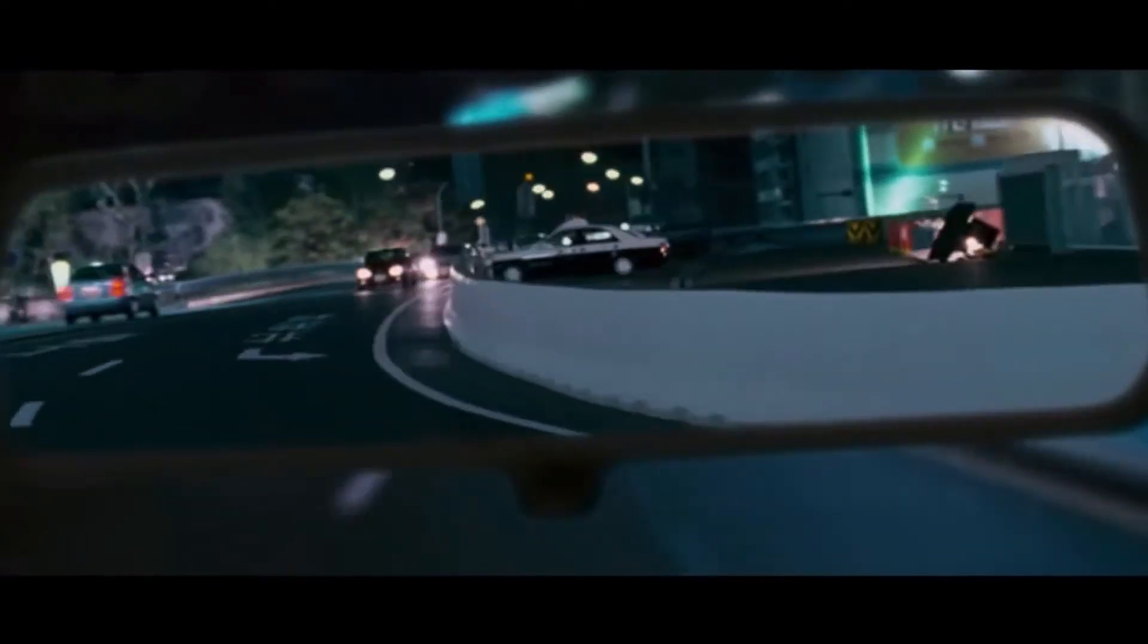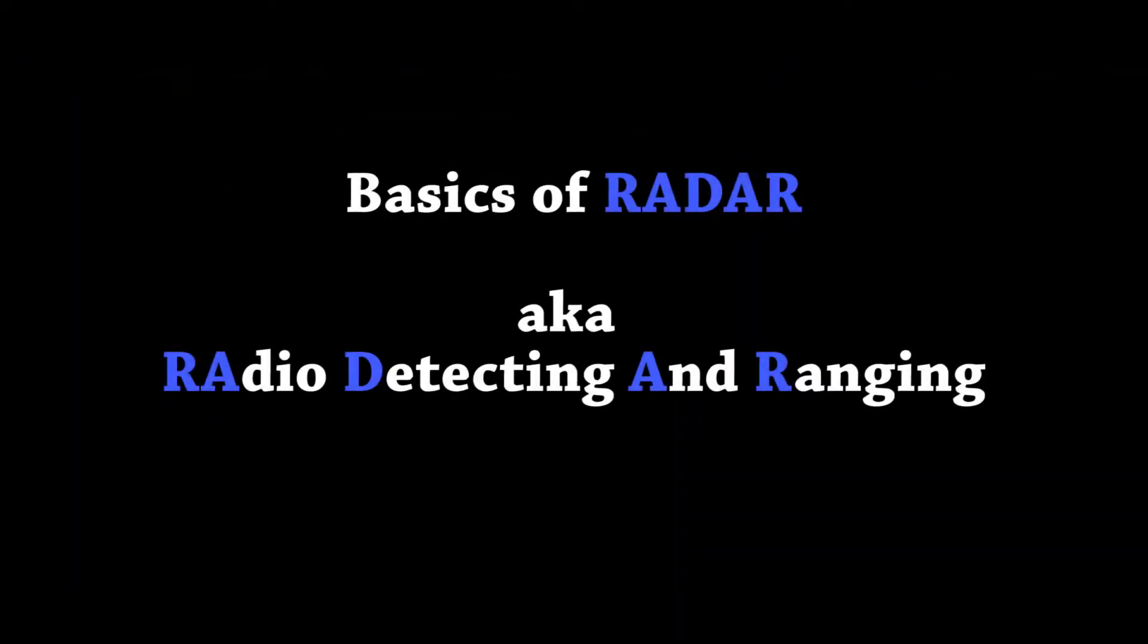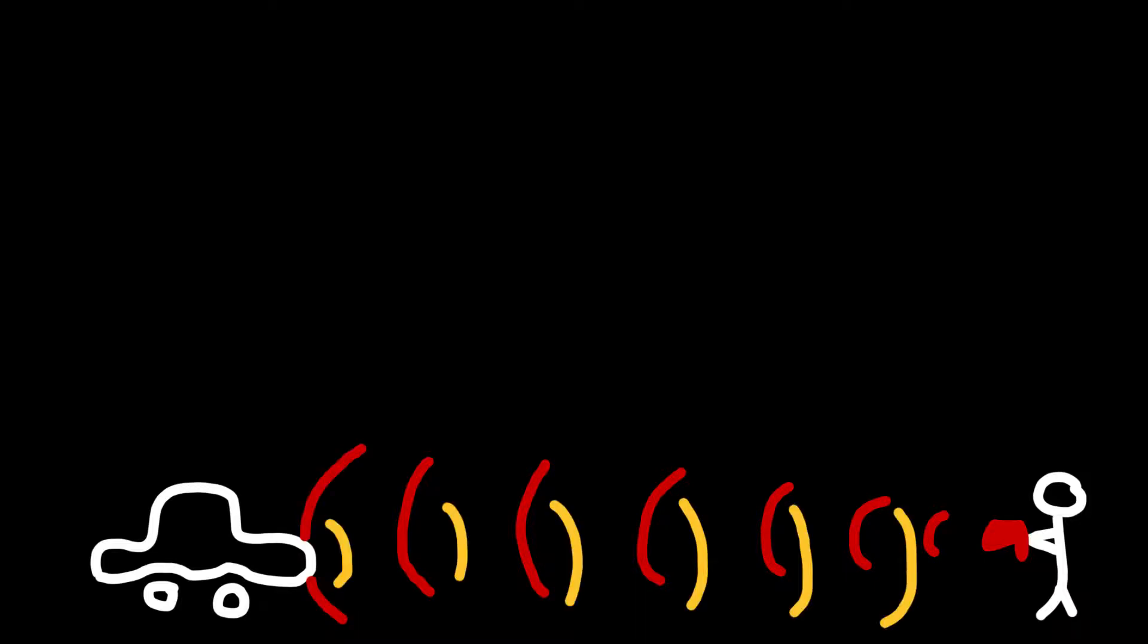So how does radar detecting work? Well, let's start off with how radar works. When a cop points his radar gun at your vehicle, he's actually shooting high-frequency radio waves at you. Your car bounces them back.